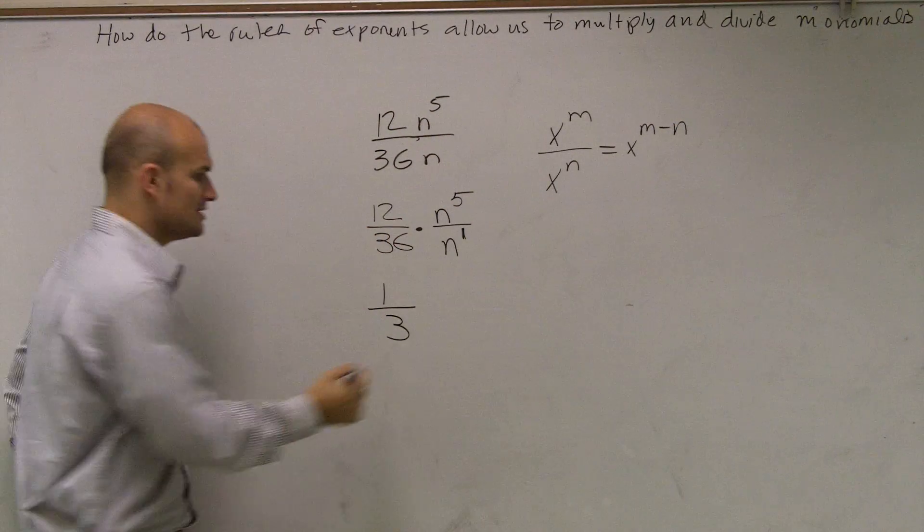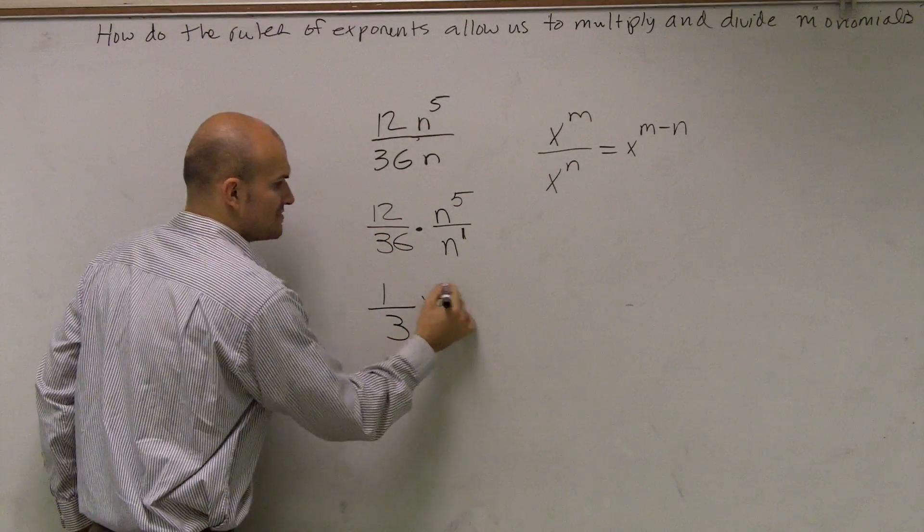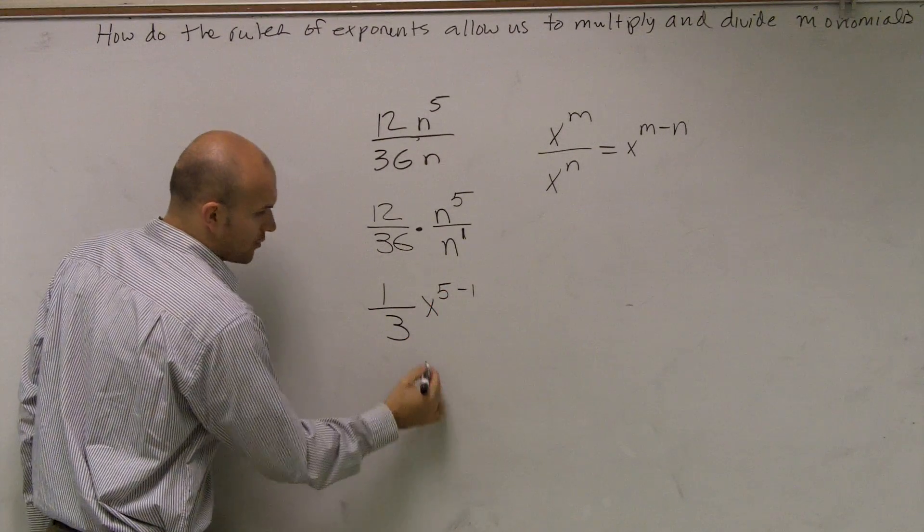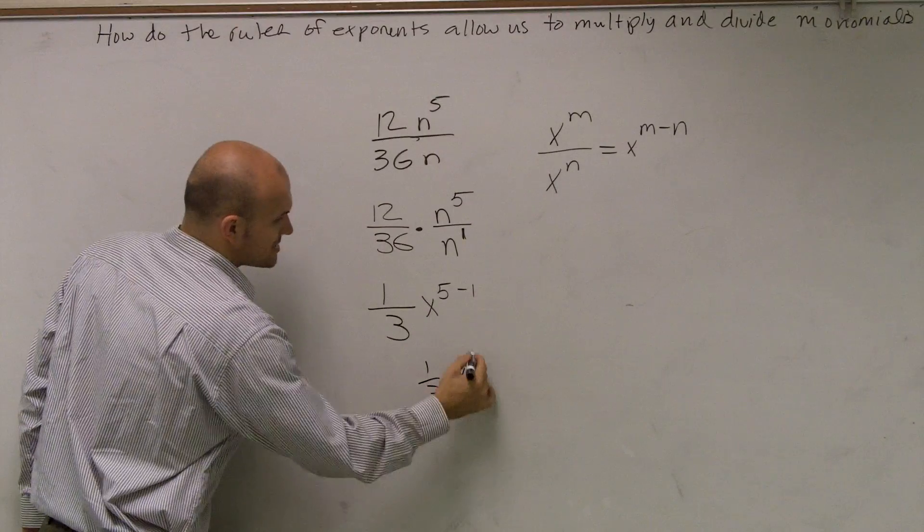So for here, all I need to do is say n times 5 minus 1. 5 minus 1 is 4. So I have 1 third n to the fourth.